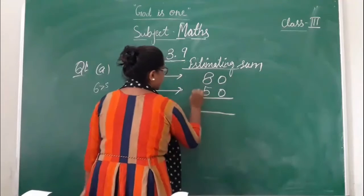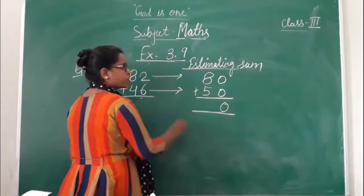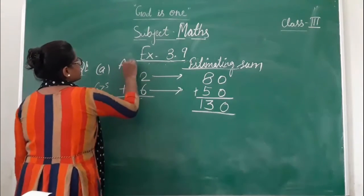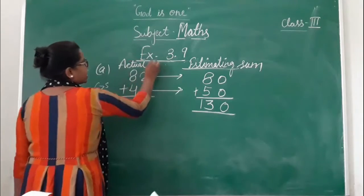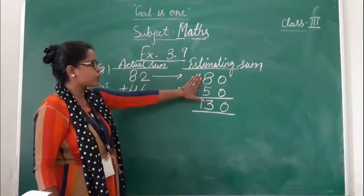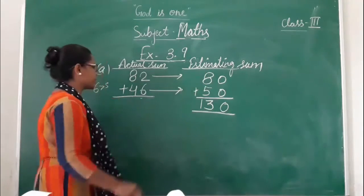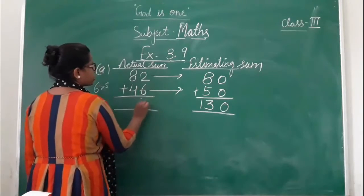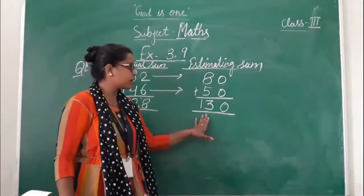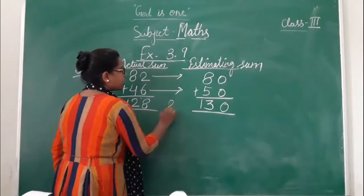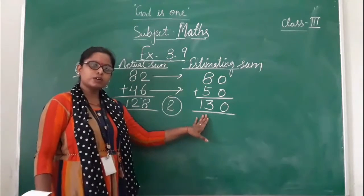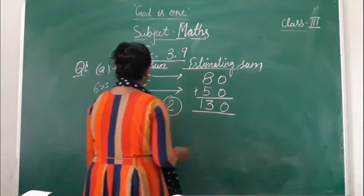Now students add: 0 plus 0 is 0, and 5 plus 8 gives 13. So the estimating sum is 130. For the actual sum: 6 plus 2 is 8, and 8 plus 4 is 12. So the actual sum is 128. Here the estimating sum is 130 and the actual sum is 128, so the difference is 2 numbers.